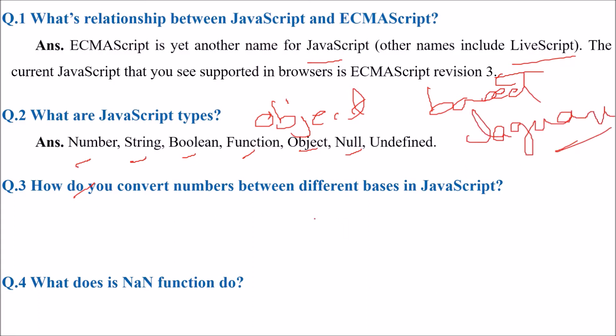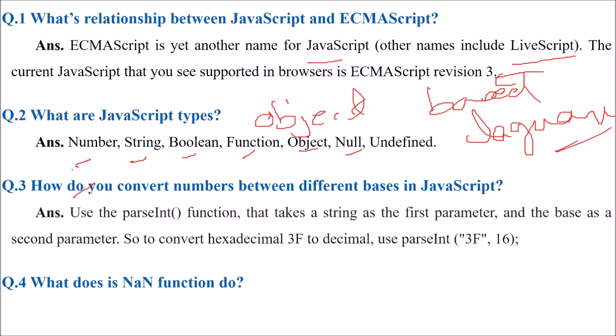How do you convert numbers between different bases in JavaScript? We use the parseInt function. This takes the string as the first parameter and the base as the second parameter. To convert hexadecimal 3F to decimal, you use 3F and then 16, the first parameter is 3F and base as the second one.